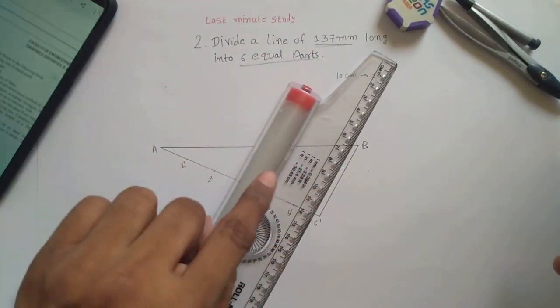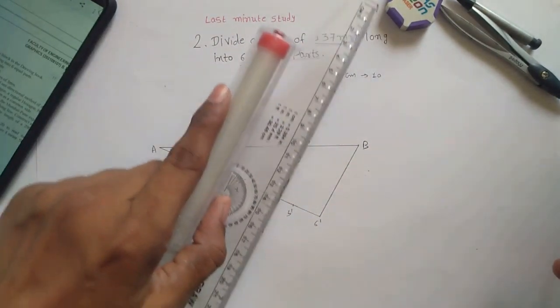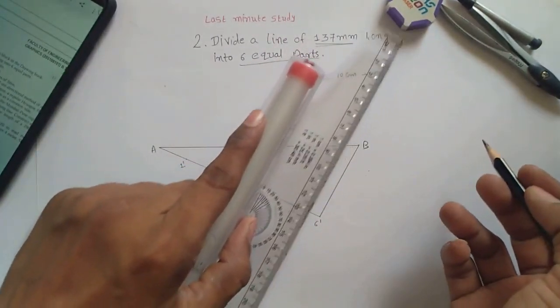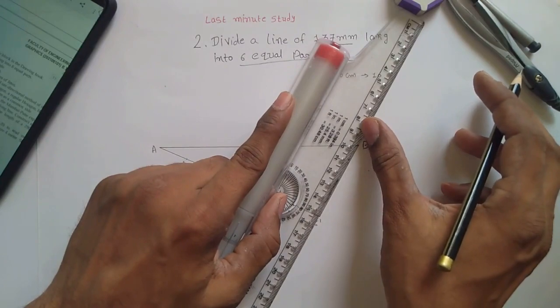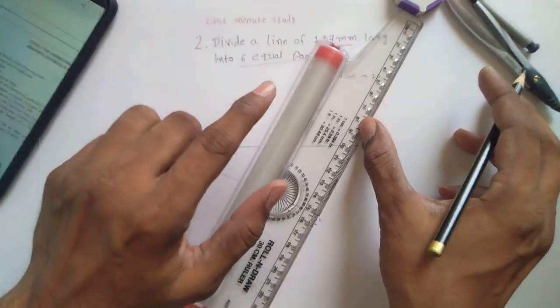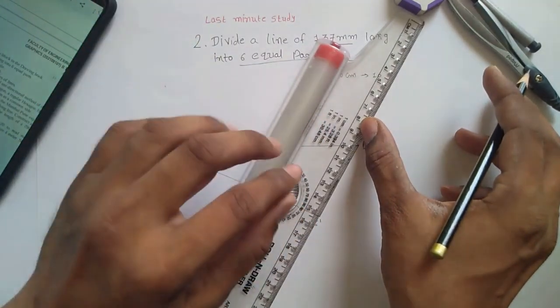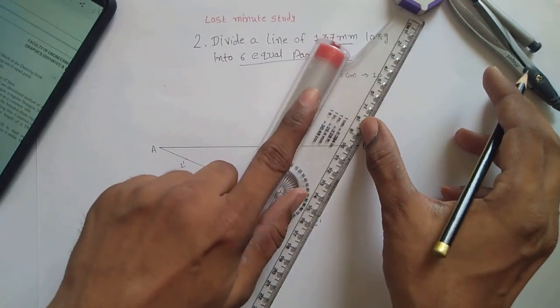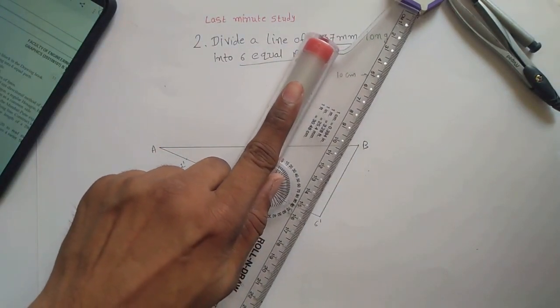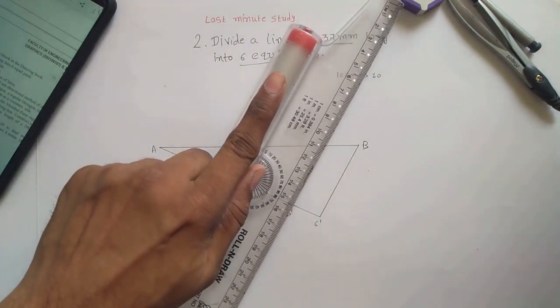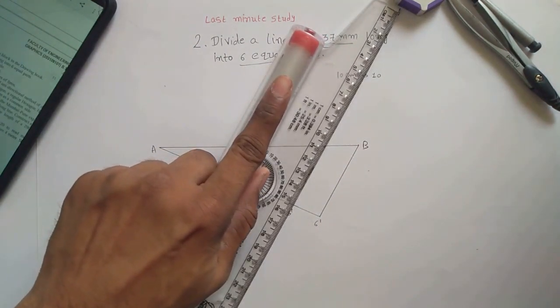Now using roller scale, using roller scale you have to draw a parallel line from B6 dash like this. So I hope everybody knows how to use a roller scale properly. I will explain you again. You have to lift your roller scale a little bit and drag it along and wherever you want to draw a parallel line put it back like this.